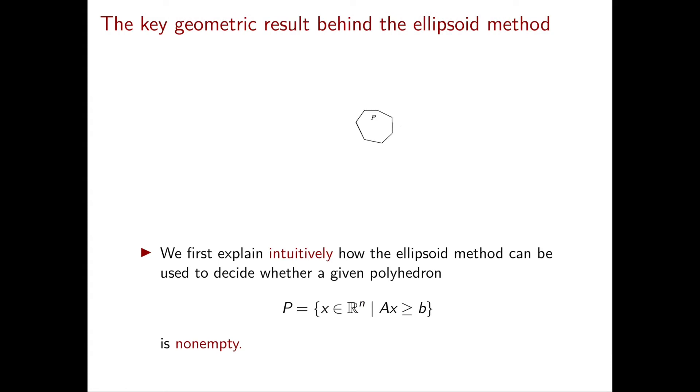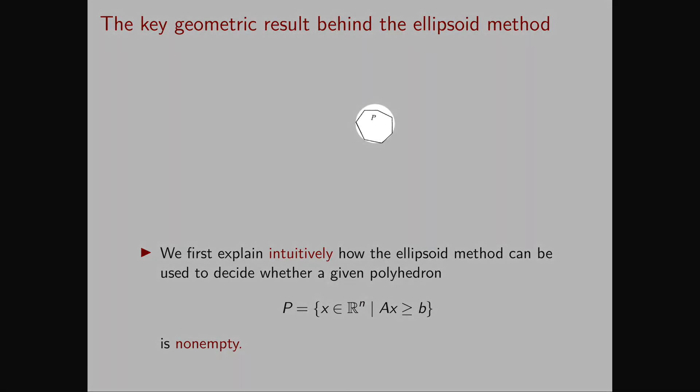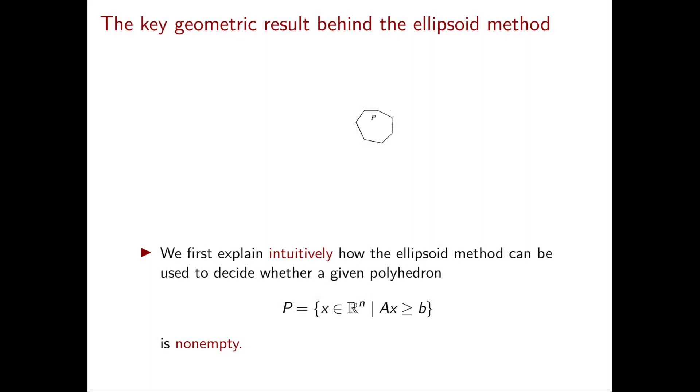We are now ready to explain intuitively how the ellipsoid method works. Let's visualize this in a picture. This is our given polyhedron P and our task is to decide if it is empty or not. Of course from the picture we already know that this specific polyhedron is not empty,